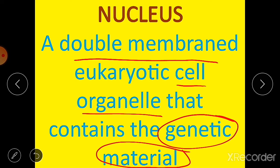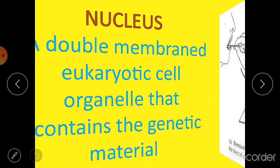As we saw in the last video, some cell organelles like the nucleus and mitochondria have a double membrane boundary.